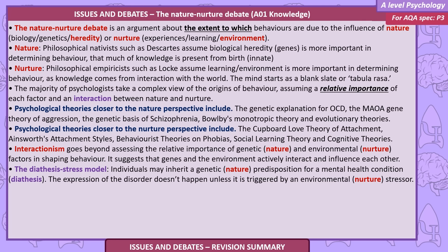The majority of psychologists take a complex view on the origins of behaviour, assuming a relative importance of each factor and an interaction between nature and nurture. Theories closer to the nature perspective include the genetic explanation for OCD, the MAOA gene theory of aggression, the genetic basis of schizophrenia, Bowlby's Monotrophic Theory, and evolutionary theories. Theories closer to the nurture perspective include the cupboard love theory of attachment, Ainsworth's attachment styles, behaviourist theories on phobias, social learning theory, and cognitive theories.